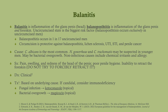Balanitis is inflammation of the glans of the penis. Balanoposthitis is inflammation of both the glans and the foreskin, so naturally uncircumcised men are at higher risk. It only occurs in uncircumcised men — affecting about 1 in 17, or roughly six to seven percent. Circumcision is protective against balanoposthitis and actually eliminates that risk. It is also protective against lichen sclerosus, urinary tract infections, sexually transmitted infections, and penile cancer, so circumcision, while controversial, does have medical benefits.